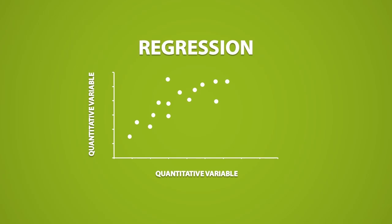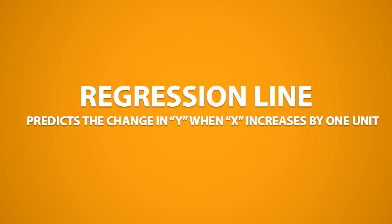But when we talk about regression, we talk about making an actual line on the graph. This is a line that represents the pattern of data, and this line is known as the regression line. A regression line predicts the change in y when x increases by one unit. The change in y describes either an increase or a decrease.